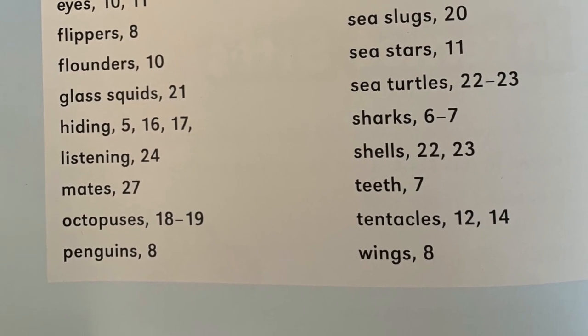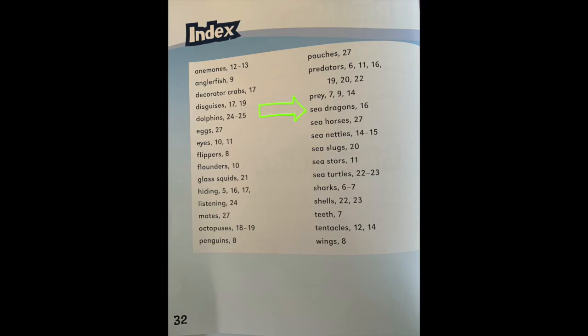So if we were looking to learn about sea dragons, we would go to page 16. If we were looking to learn about sea stars, we would go to page 11. That's the end of this story — Ocean Animal Adaptations by Julie Murphy. It was so fun reading this nonfiction book with you. I can't wait to read with you again. Bye!